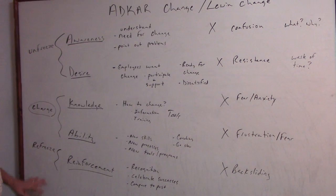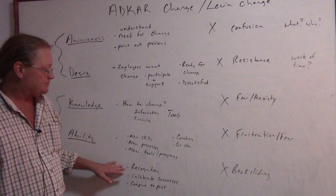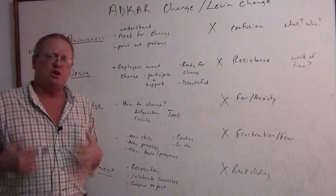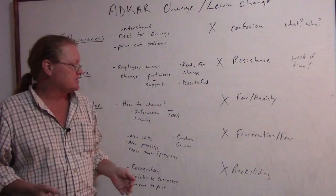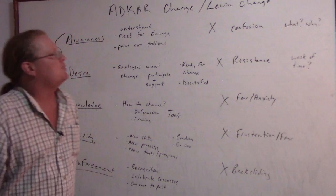The refreezing part from Lewin is called reinforcement in ADCAR, where we recognize our successes — how much better we're doing than we were in the past. We notice the improvement, point out the improvements, and celebrate the successes. If we don't do this follow-up reinforcement — the refreezing — then we'll end up with backsliding.